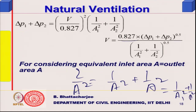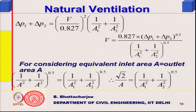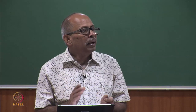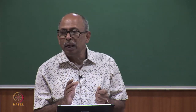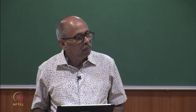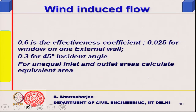I can write an equivalent area A for both inlet and outlet. When inlet and outlet areas are different, this equivalent area is given by the formula: 2/A-squared equals 1/A1-squared plus 1/A2-squared. From this I can then calculate the flow.